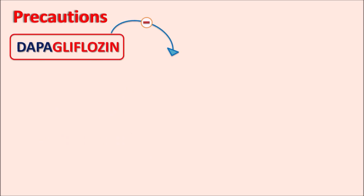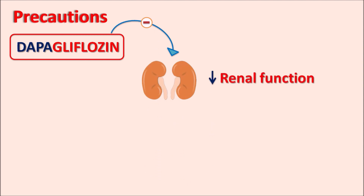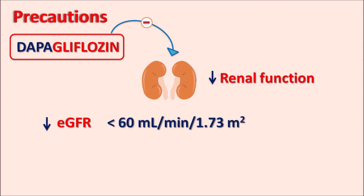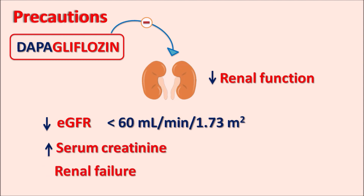Dapagliflozin can inhibit renal functionality, producing impaired renal function. This may result in a decreased estimated glomerular filtration rate (eGFR). When eGFR falls below 60 mL/min/1.73 m², this drug should be avoided. It can also reduce creatinine excretion, resulting in increased serum creatinine levels, and may ultimately lead to renal failure.